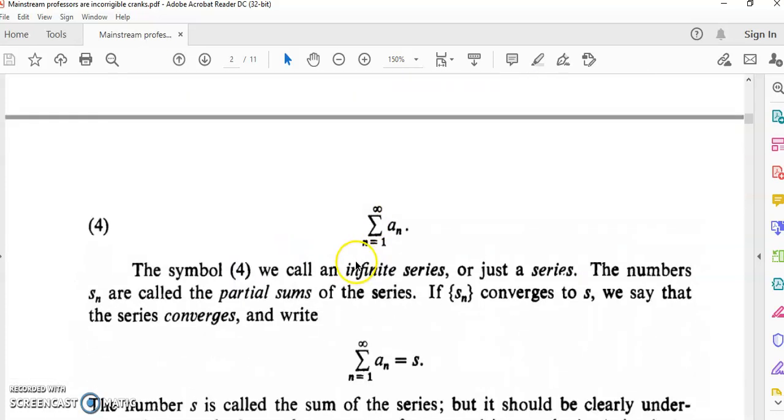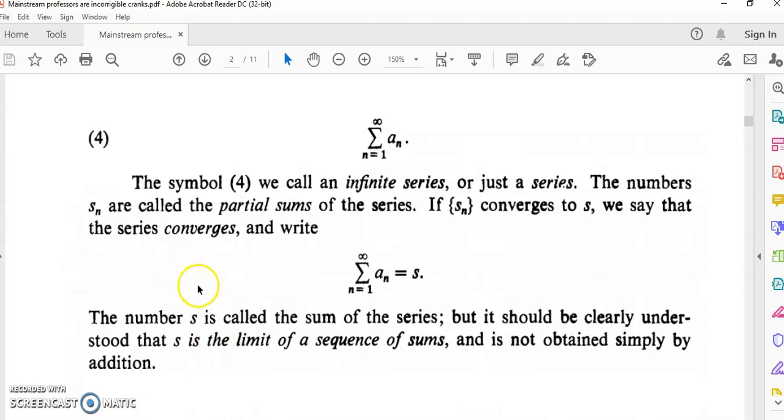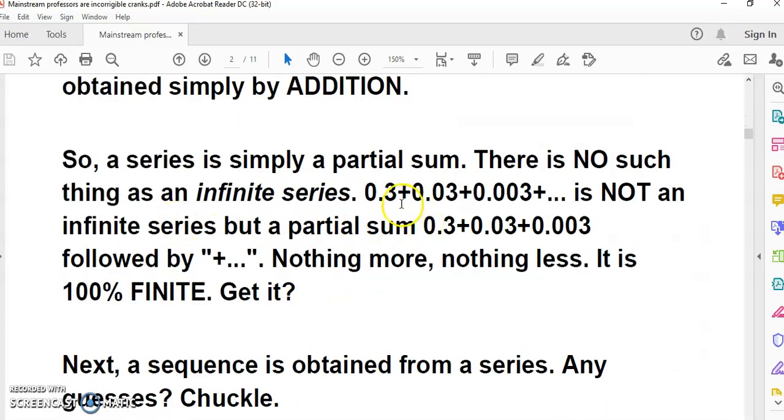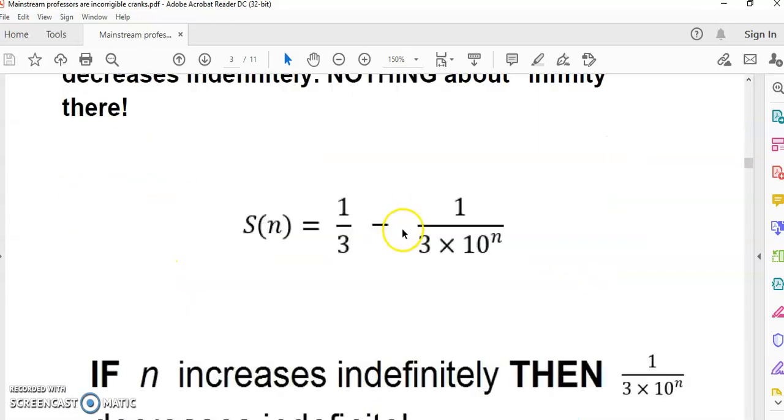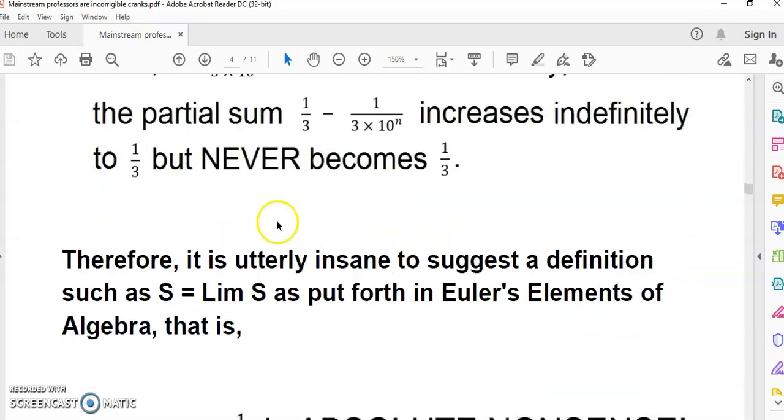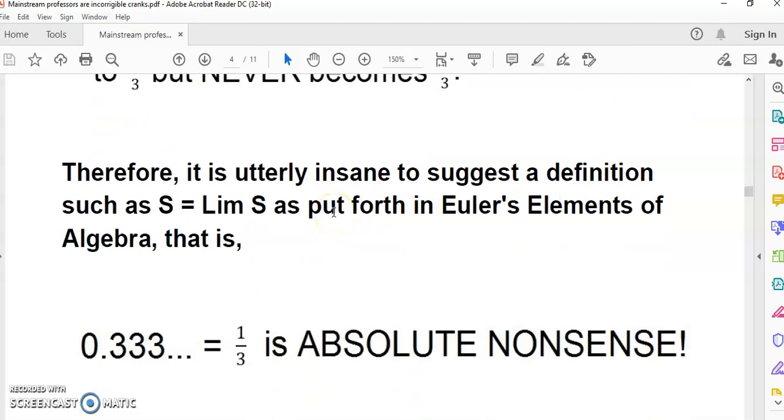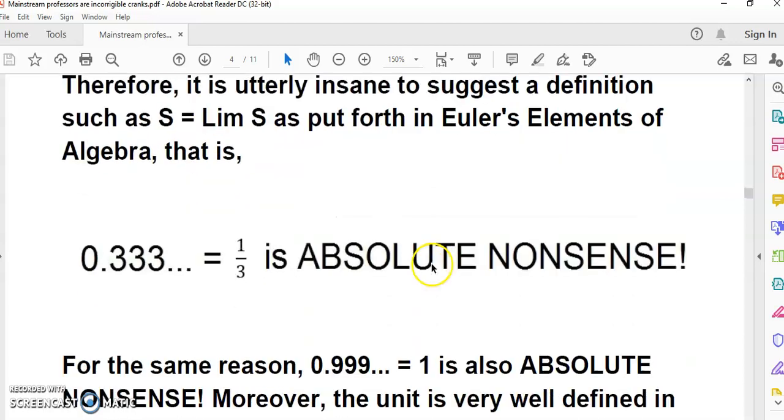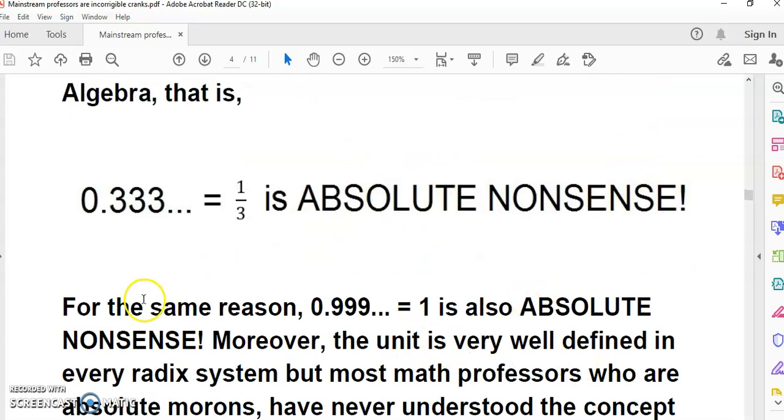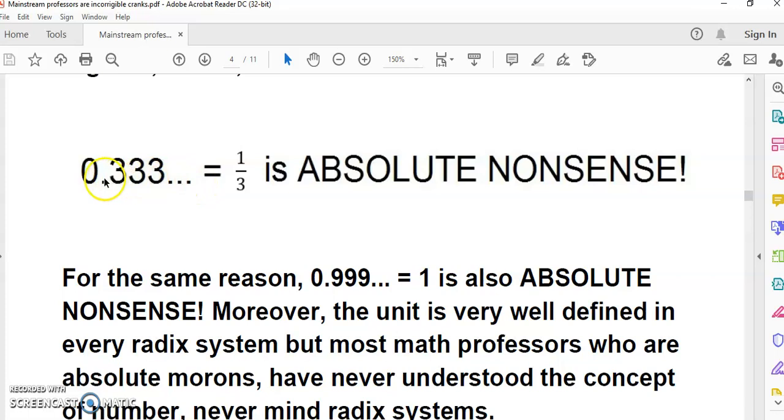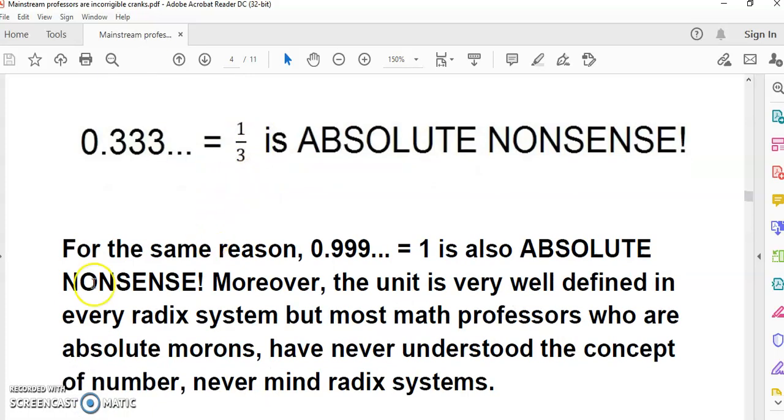You can find that definition in German in this first link which I've got over here: S = Lim S, which says 'daher ist uns bruch' (therefore is our fraction) '1/(1+a) gleich dieser unendliche unendlichen Reihe' and then it gives the expression which is the series. You can go there and look at that for yourself. Mainstream academics don't even know their own theory, and it's utterly insane to suggest a definition such as S = Lim S.